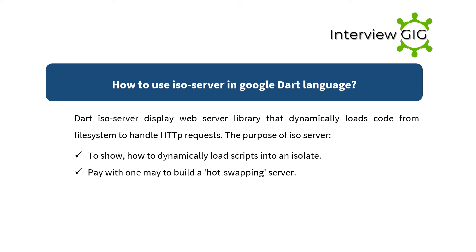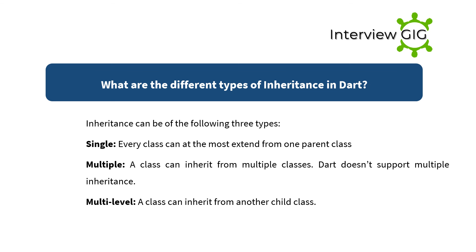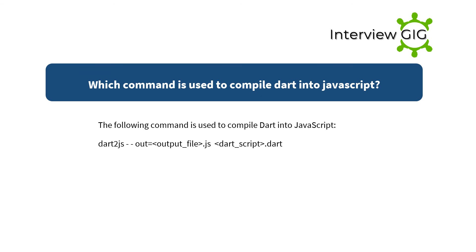What are the different types of inheritance in Dart? Inheritance can be of three types: Single — a class can extend from at most one parent class; Multiple — a class can inherit from multiple classes, but Dart does not support multiple inheritance; Multi-level — a class can inherit from another child class.